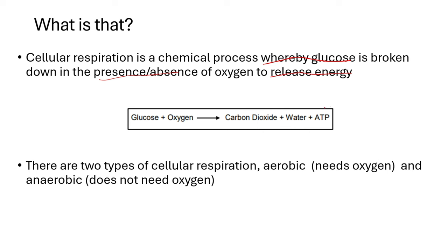That energy has a scientific term — it is known as ATP. Whenever you see the word ATP it is referring to energy. That is the same energy that you use to do work. The energy that you get after eating is known as ATP — adenosine triphosphate — but just know it as ATP.